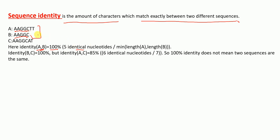The identity between B and C — when we do the alignment of B and C, looking at A, A, G, C and A, A, G, A, A, G, G — it is also 100%. But the identity between A and C, if we look at the characters that are exactly matching, that comes around 85%, although there are six identical nucleotides out of seven.